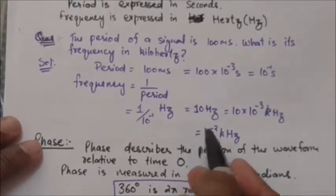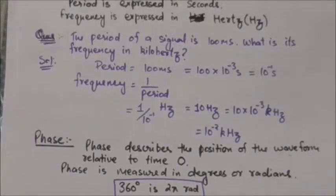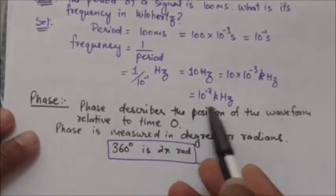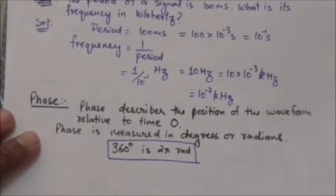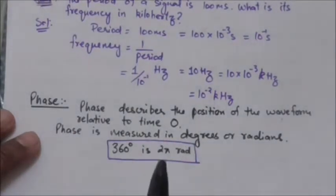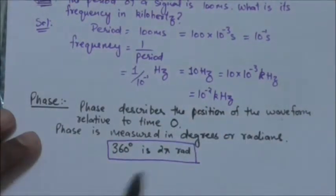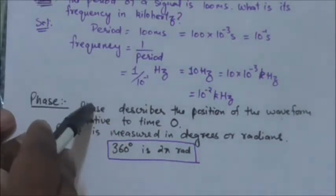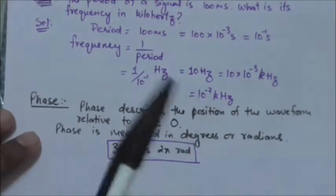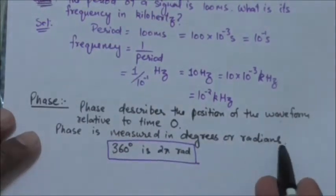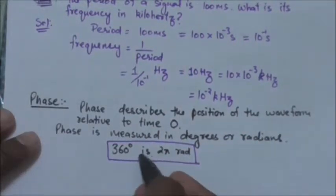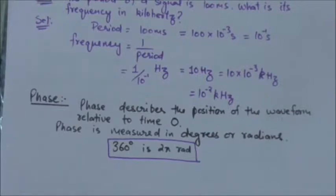Now we will study about phase. Phase describes the position of the waveform relative to time zero and is measured in degrees or radians. It indicates the status of the first cycle. If we think of a waveform as something that can be shifted backward or forward along the time axis, then the phase describes the amount of that shift. Note that 360 degrees equals 2π radians.